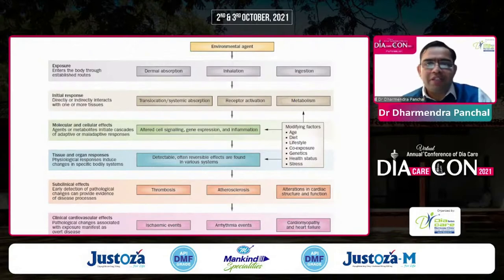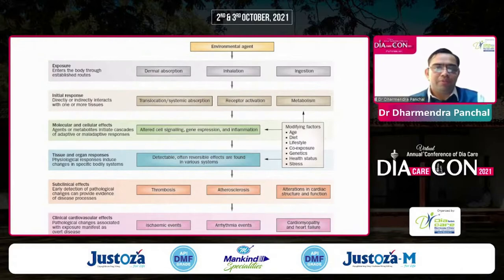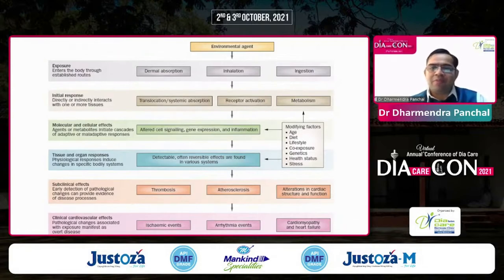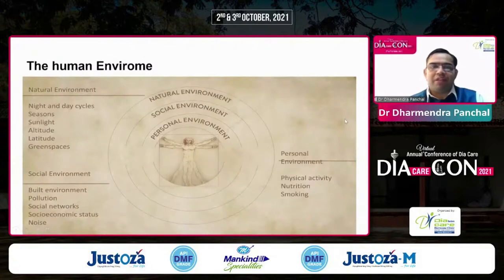Even in the absence of large genetic changes, cardiovascular disease risk in a population can be affected by change in environment — moving to a new environment can change that risk. The environmental agent can lead to cardiovascular disease through exposure via thermal absorption, inhalation, or ingestion. The initial response involves either translocation, systemic absorption, receptor activation, or metabolism, which exerts effects at the molecular and cellular level, generating target organ responses through various mechanisms.